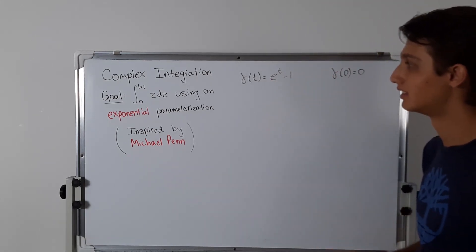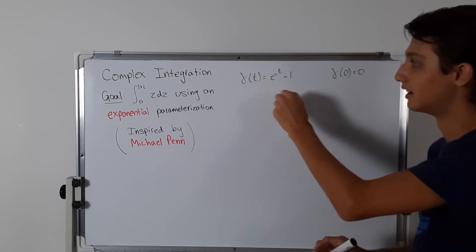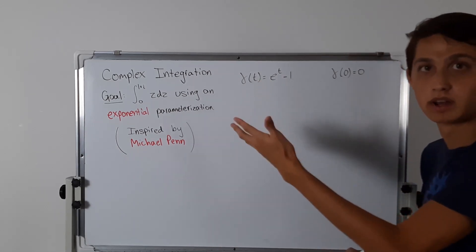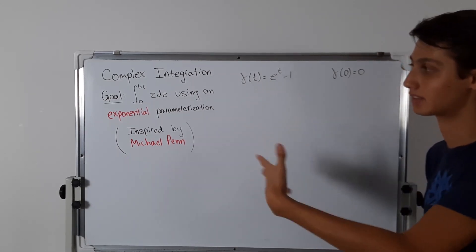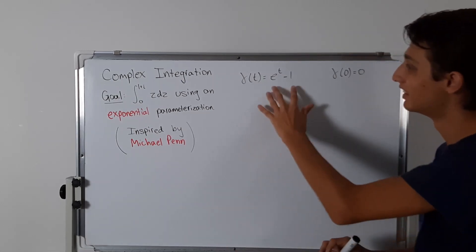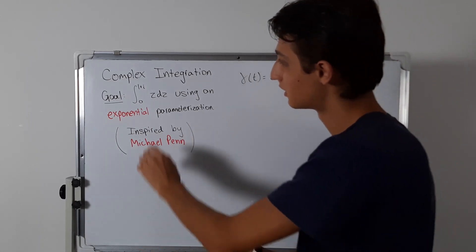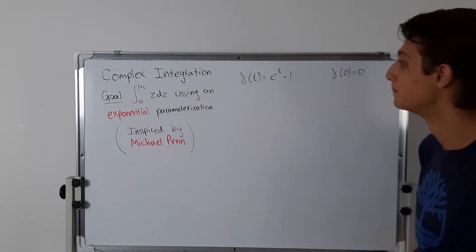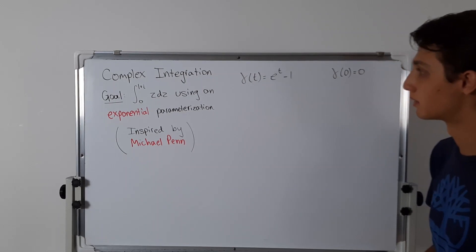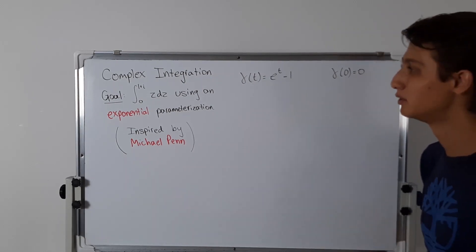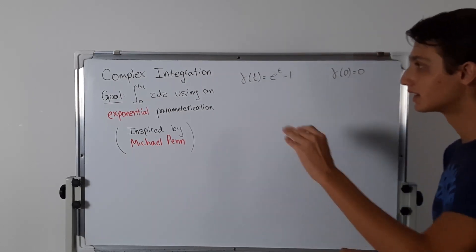Now the problem with this is, if t is a real number, which we want, this is just purely real. We need some sort of imaginary component to get to that 1 plus i. So we need to figure something out.